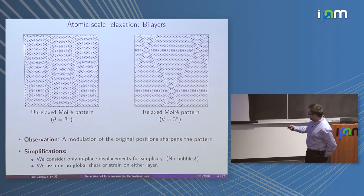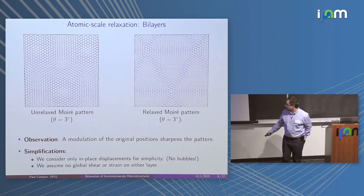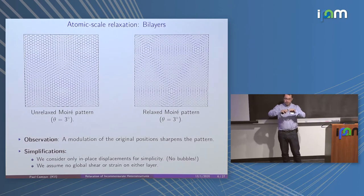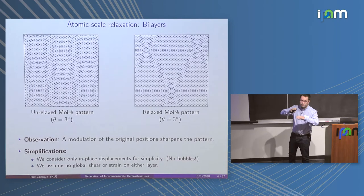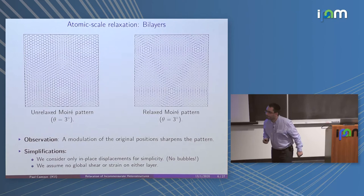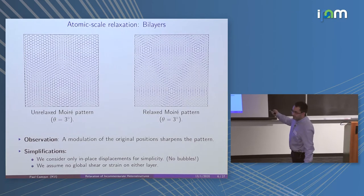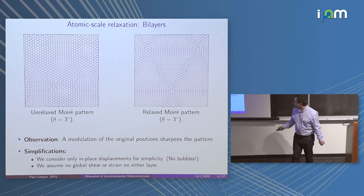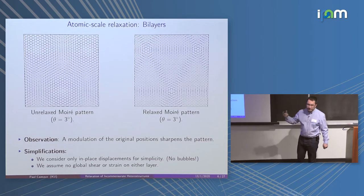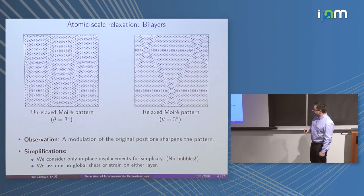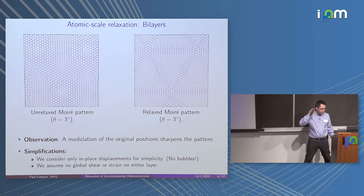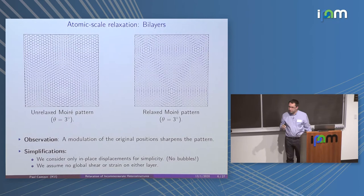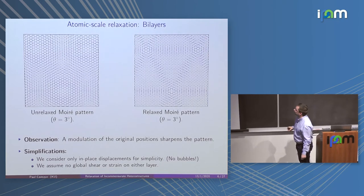The basic idea is that we have the sharp pattern. For the simplification, I do not consider too much the out-of-plane modulation — these are graphene layers, one blue on top of one red, both hexagonal. We consider only the in-plane shear or strain, and there is no consideration of the energetics of the out-of-plane curvature.